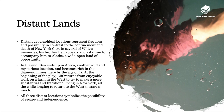When it comes to symbols in the play, the first is that of distant lands. Distant geographical locations represent freedom and possibility, in contrast to the confinement and death of New York City. In several of Willy's memories, his brother Ben appears and asks him to accompany him to Alaska, a wide open land of opportunity. In the end, Ben ends up in Africa, another wild and mysterious location, and becomes rich in the diamond mines there by the age of 21. Biff also returns from an enjoyable stint on a farm in the West, longing to return there to start a ranch. All three distant locations symbolise the possibility of escape and independence.